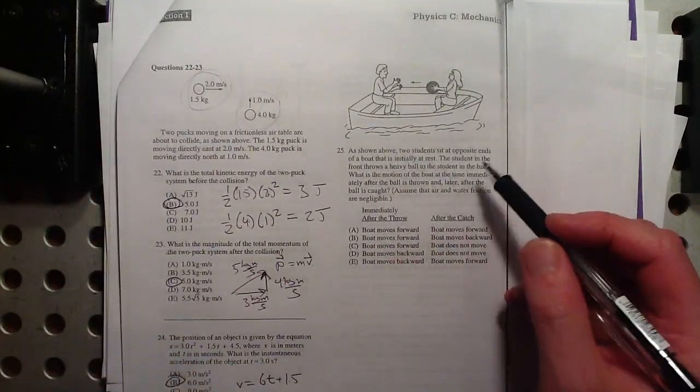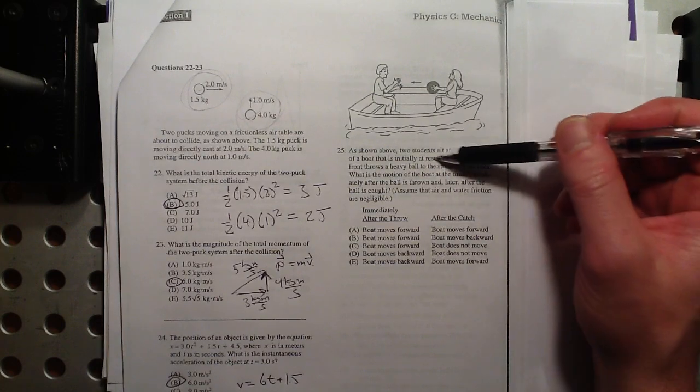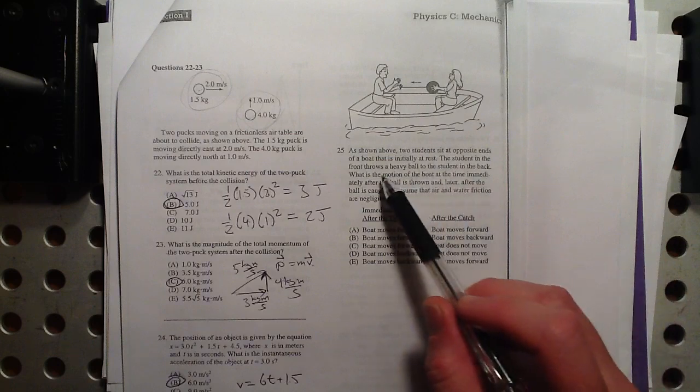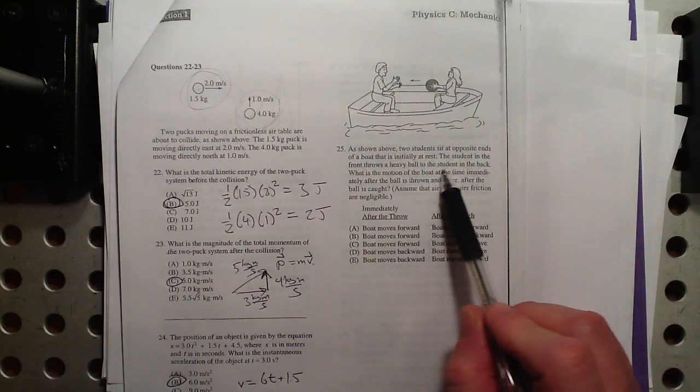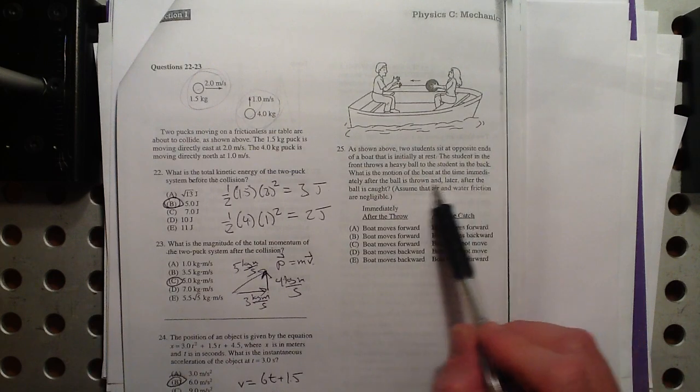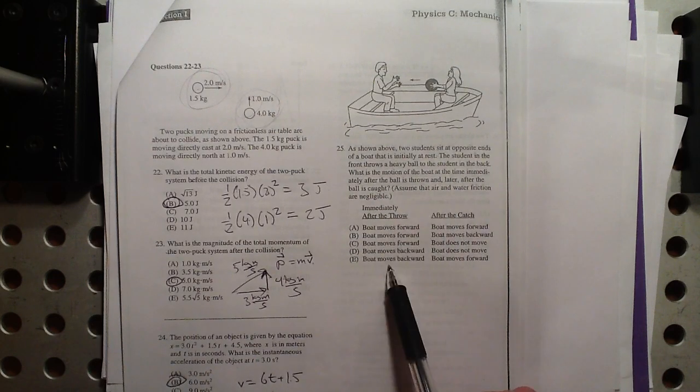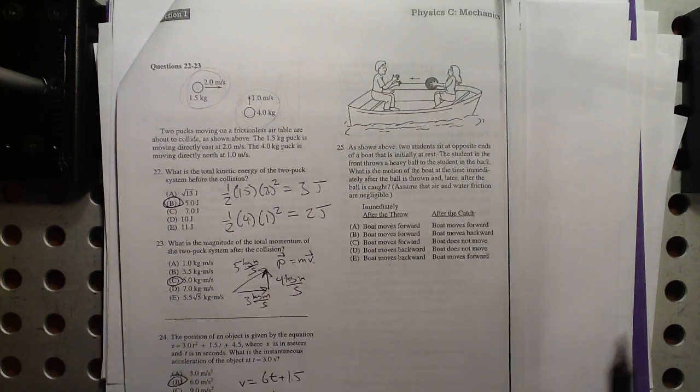Number 25, as shown above, two students sit at opposite ends of a boat that is initially at rest. The student in the front throws a heavy ball, like a big medicine ball, to the student in the back. What's the motion of the boat at the time immediately after the ball's thrown, and later after the ball's caught?